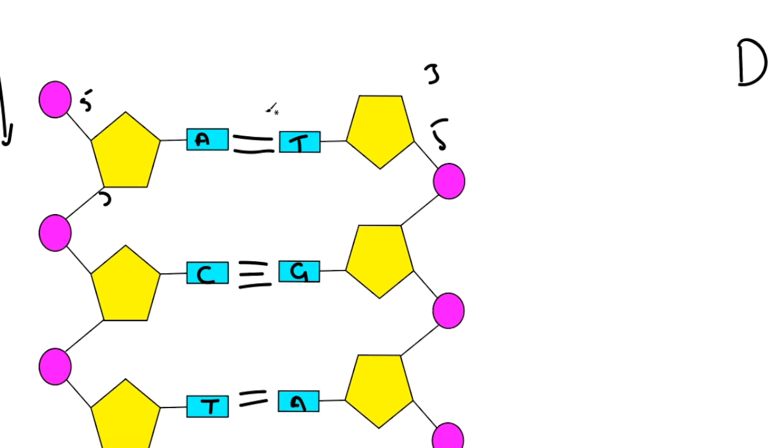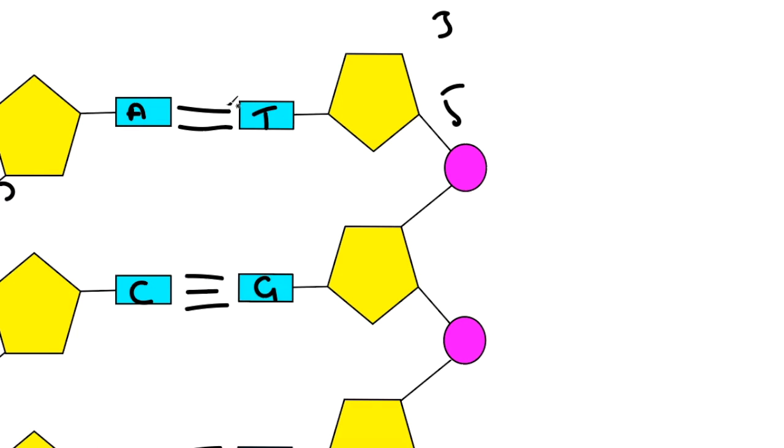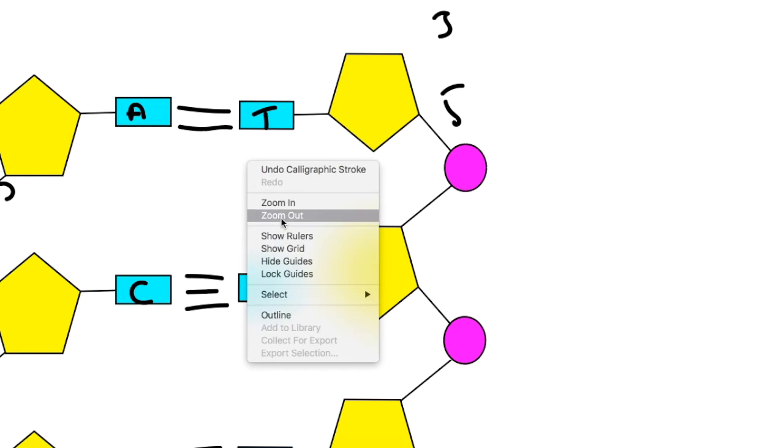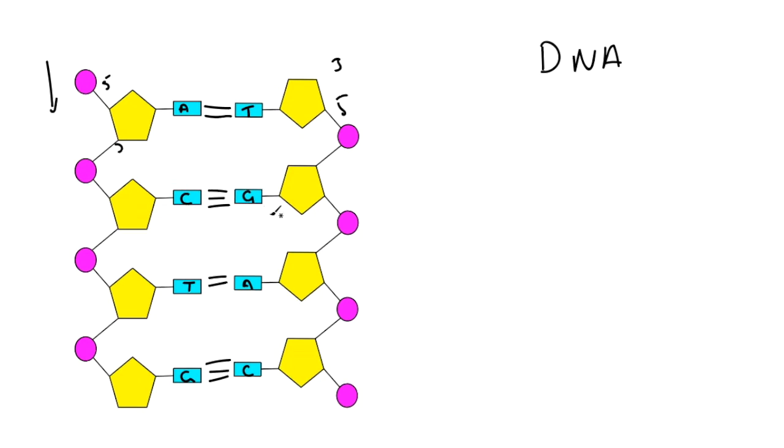The reason you need to know about these bonds is if you're trying to separate this inside the lab, you need to heat this up. And if there's two bonds, it doesn't take as much heat. And if there's three bonds it does. So that's how they pair together.